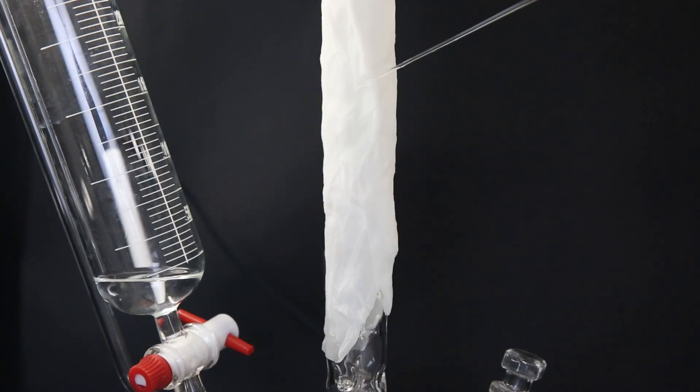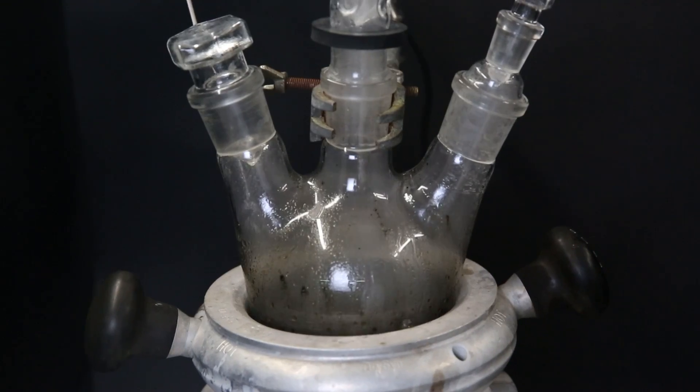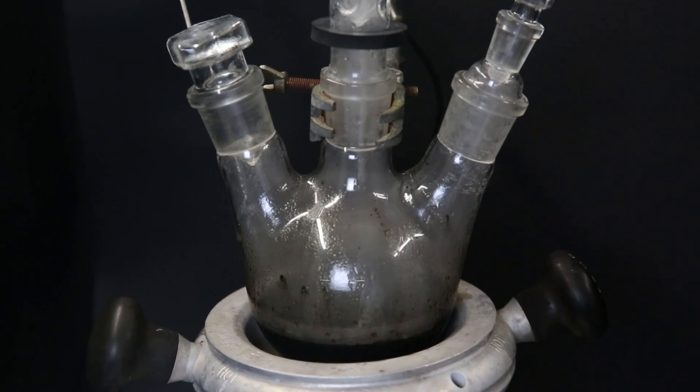Instead, I opted to wrap part of the column in paper towels and soak them in water. This turned out to be effective and the thermometer started showing around the boiling point of diethyl ether. After doing this, I let it continue for a while and stopped the distillation when pretty much nothing more came over. So I removed the heat source and stopped the distillation.